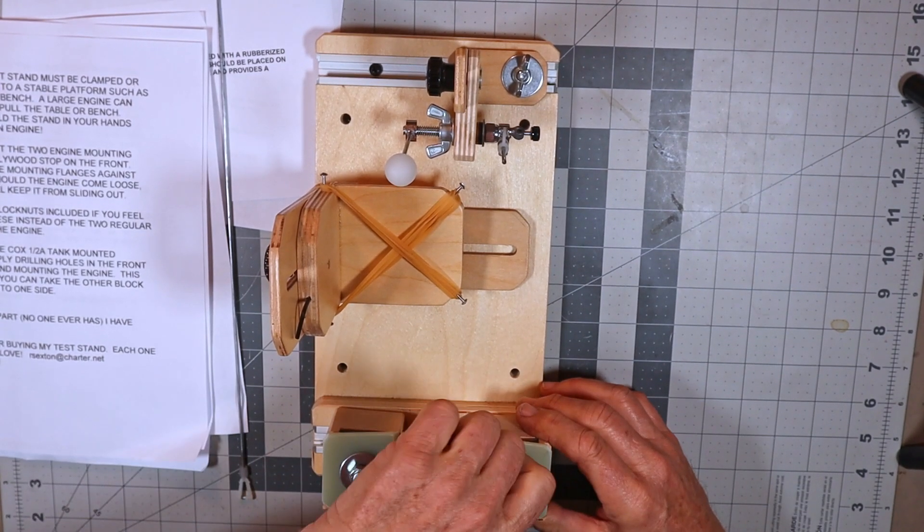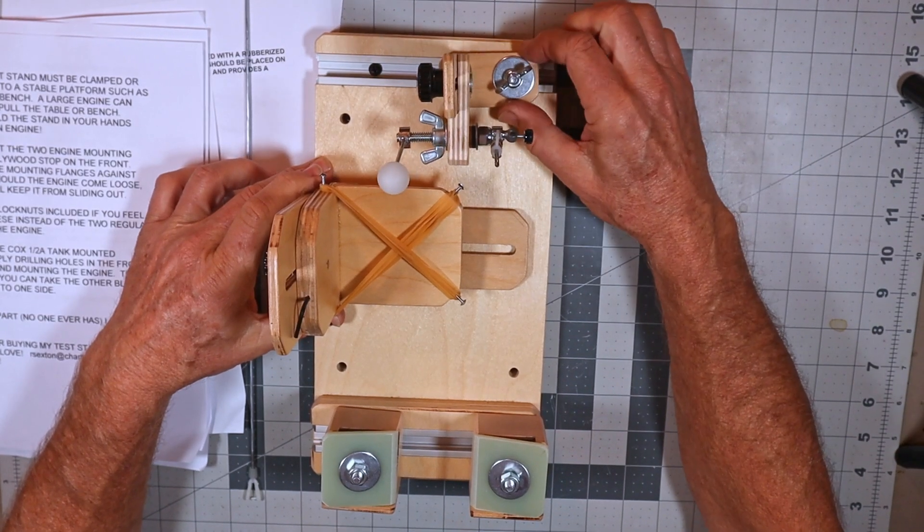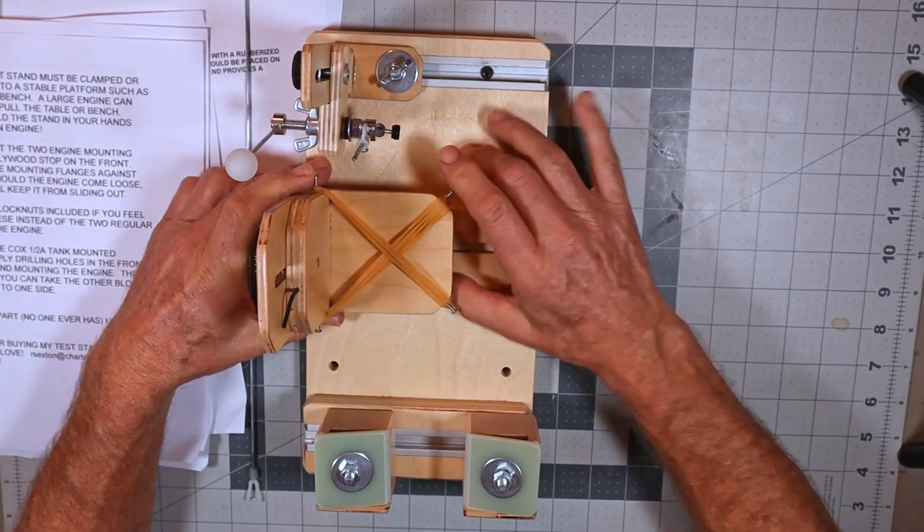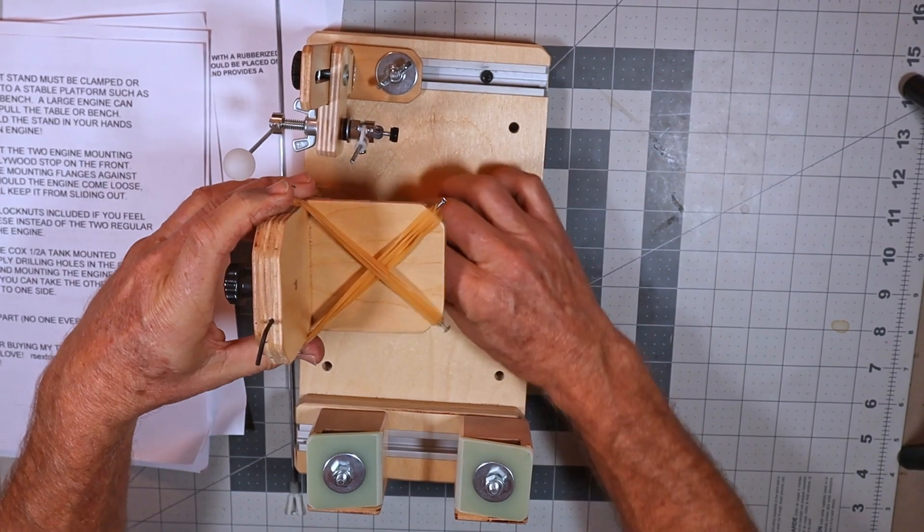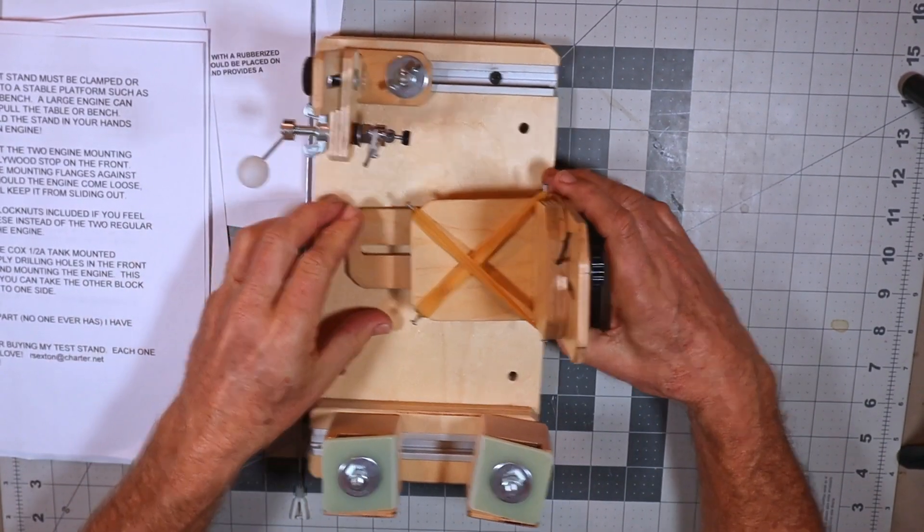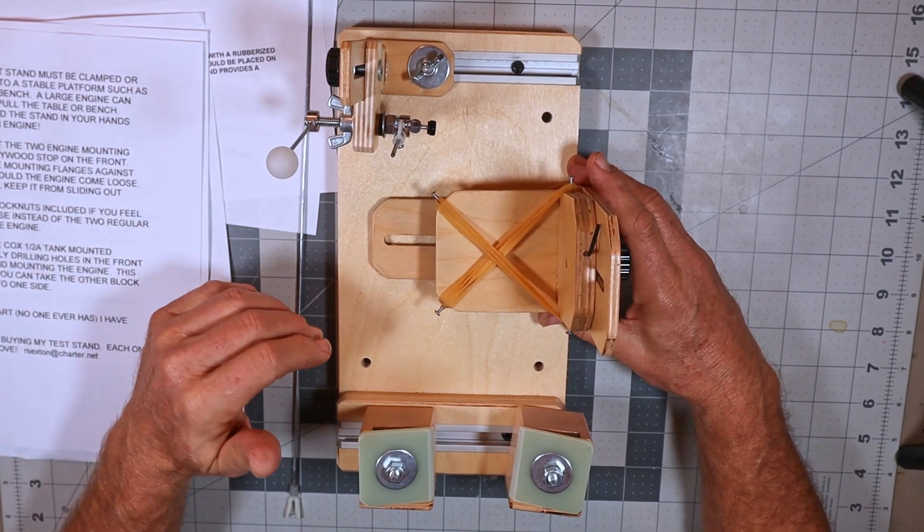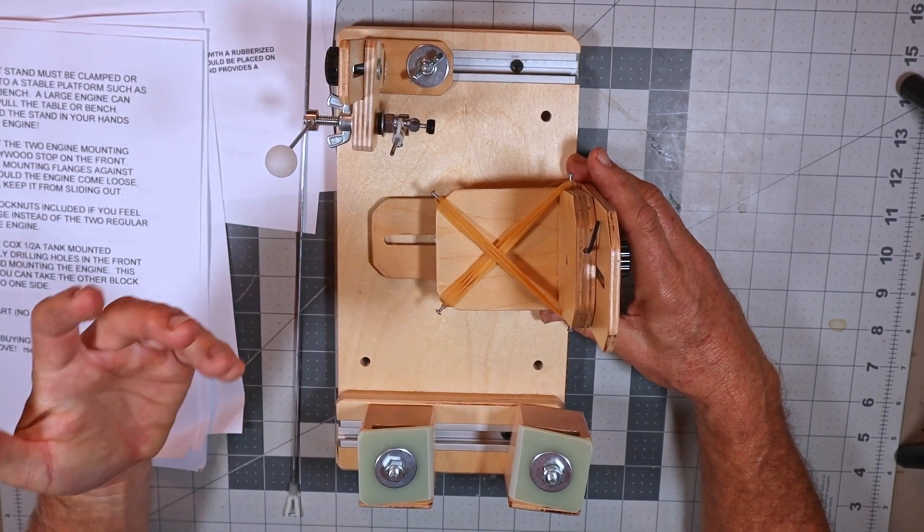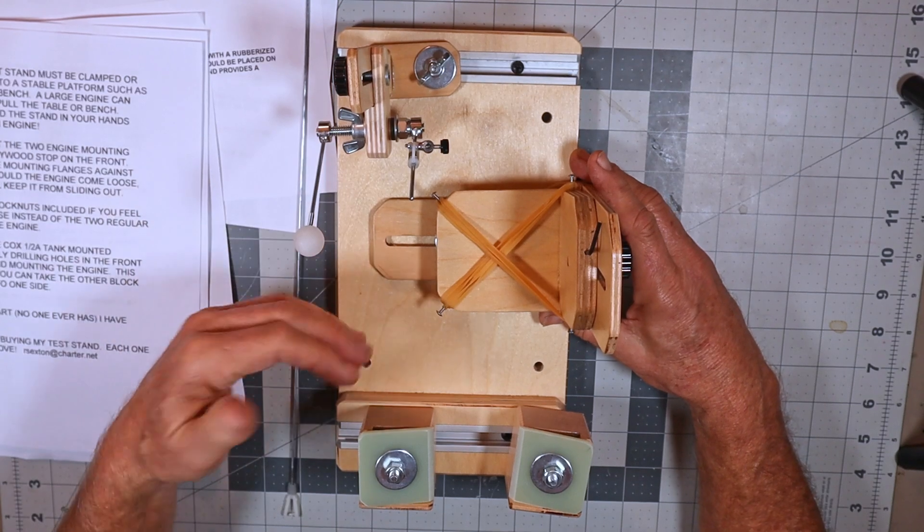In the ad this thing was like this and I was like well it looks like it's set up for right hand throttle only, but no you can change it around. Of course look at this, it's beautiful. Some engines have throttle on the right side, some have them on the left side.